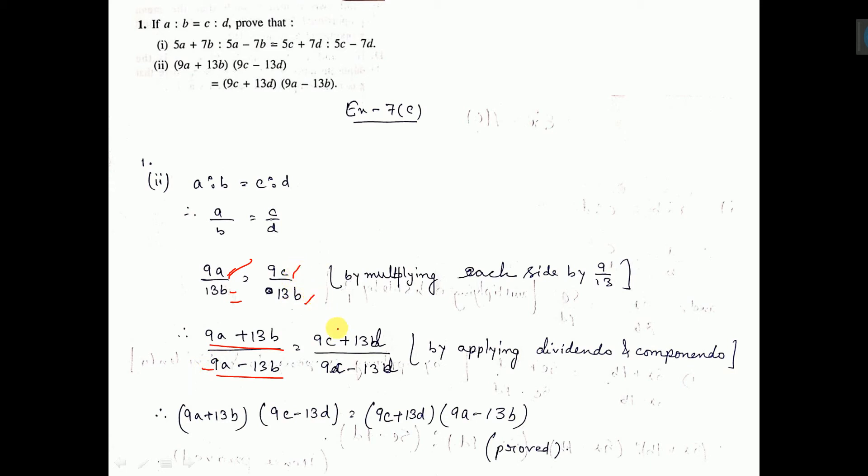Here also, numerator plus denominator here, then numerator minus denominator here. That means, this plus this by this minus this equal to this plus this by this minus this.